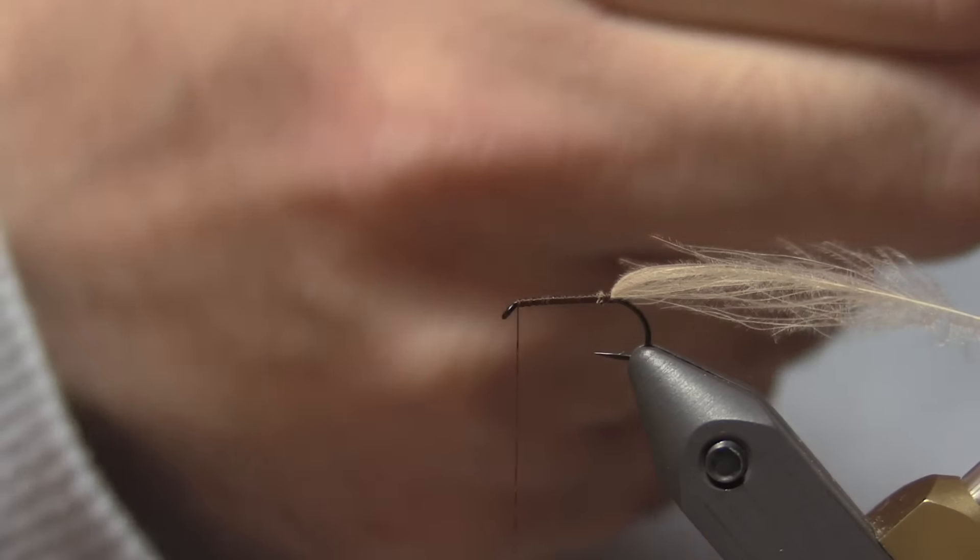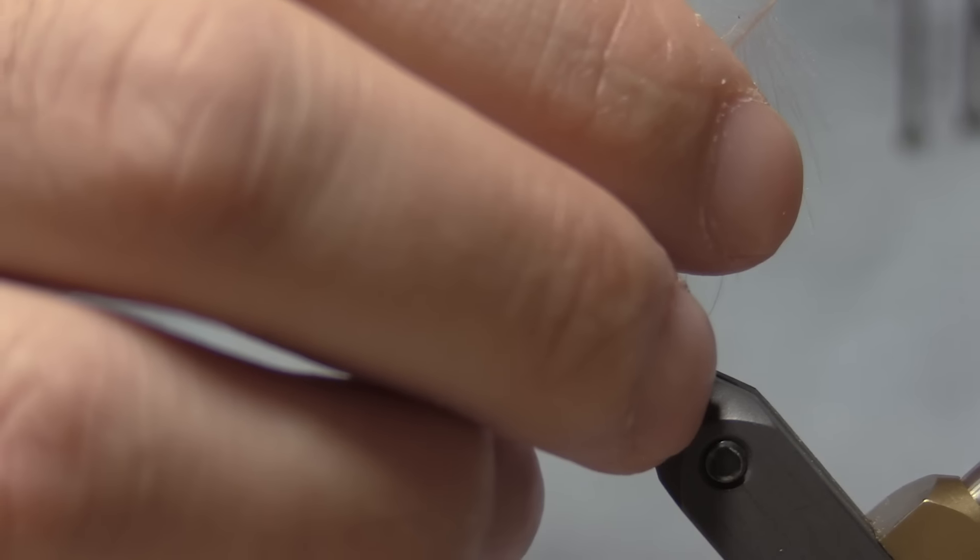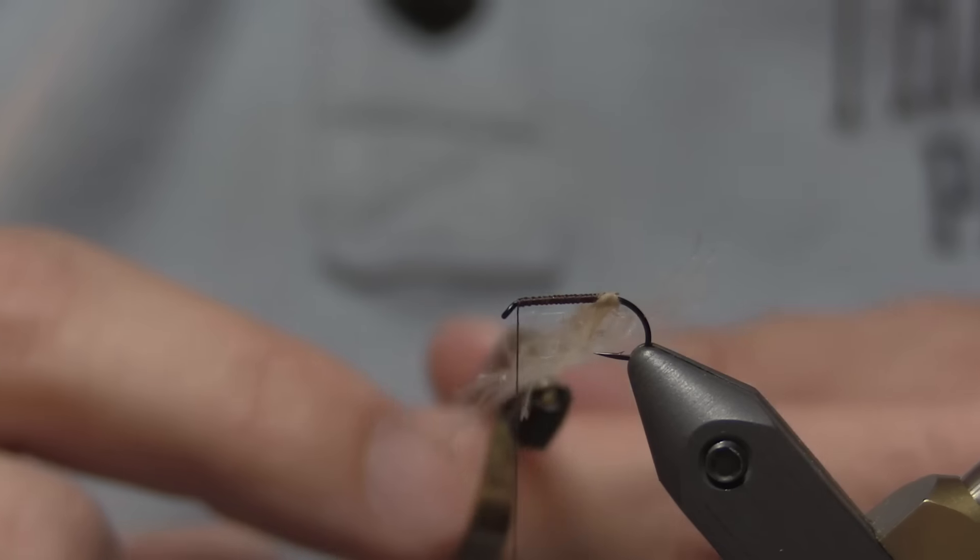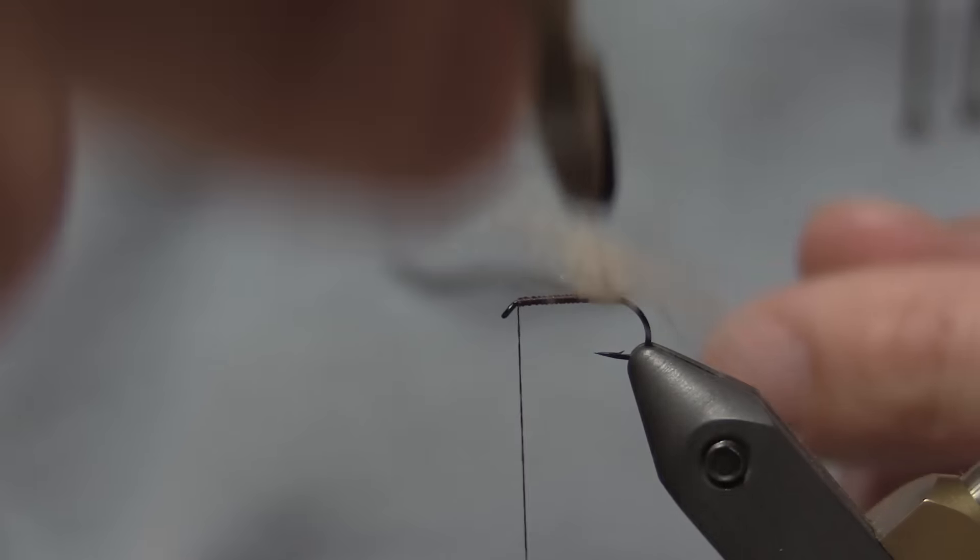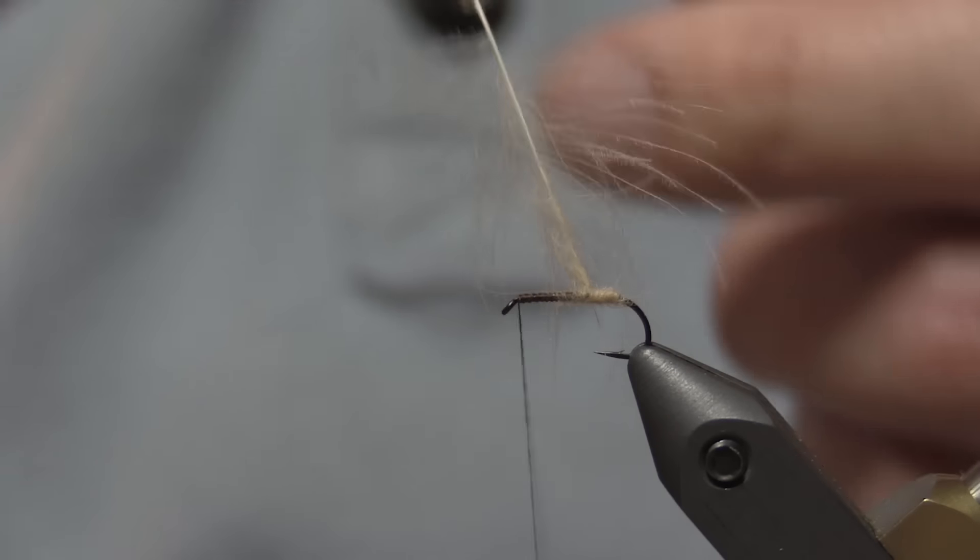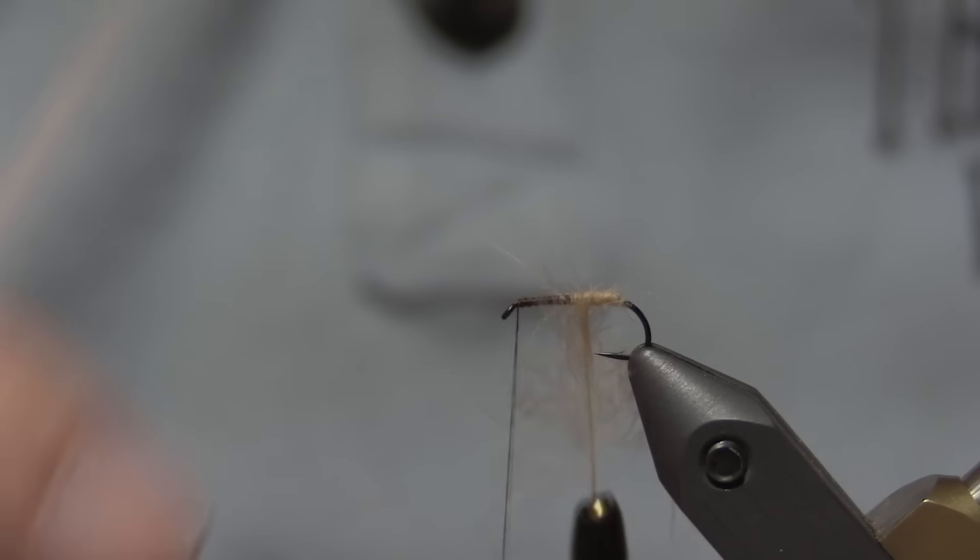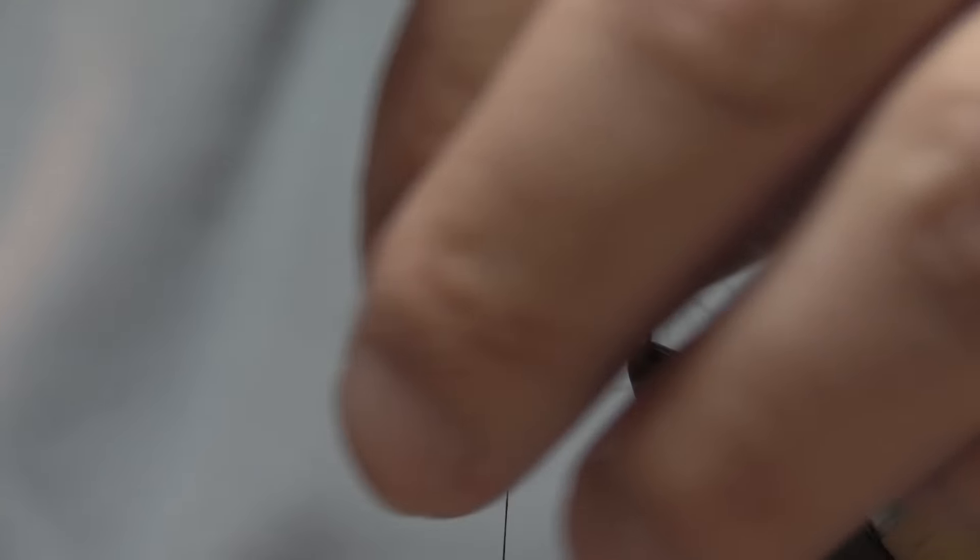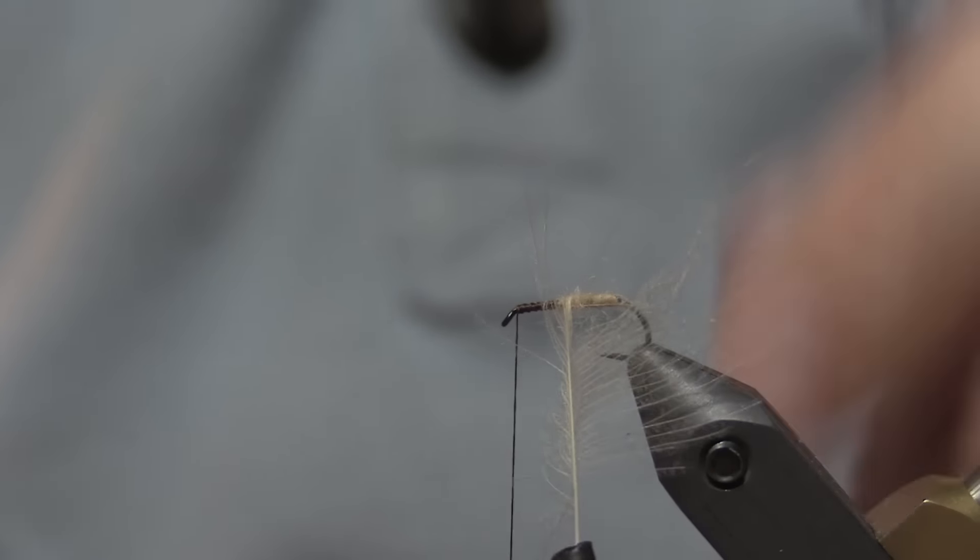You can just spiral the thread up to the hook eye. You're going to take a hackle plier, and without twisting, you're just going to wrap it all the way up the hook shank. And once you get to the middle of the hook shank, right about here, you have all those longer fibers. You're just going to stroke them all back as you wrap.